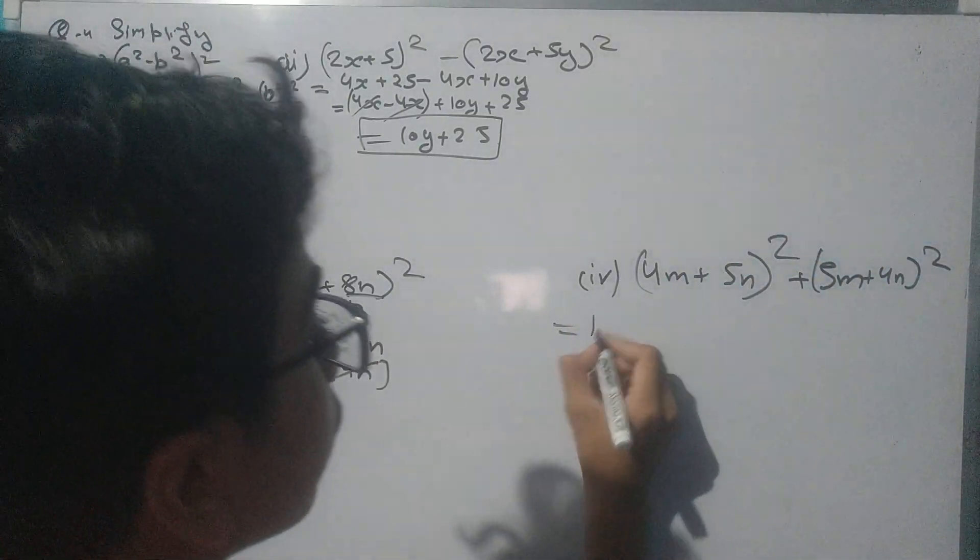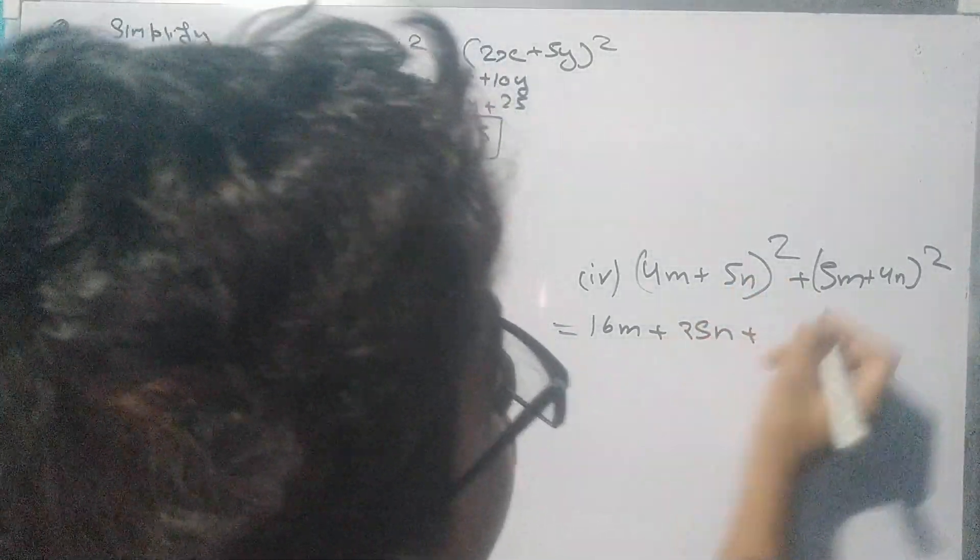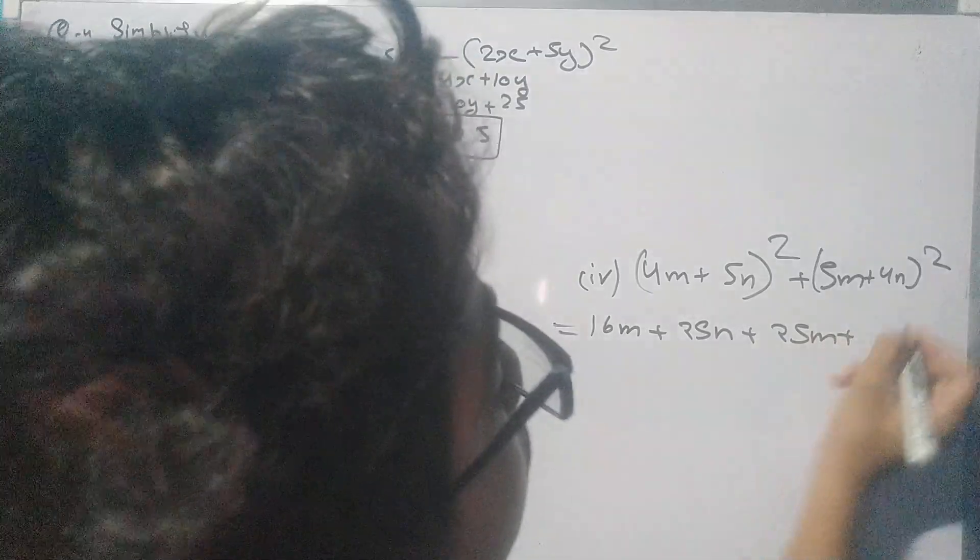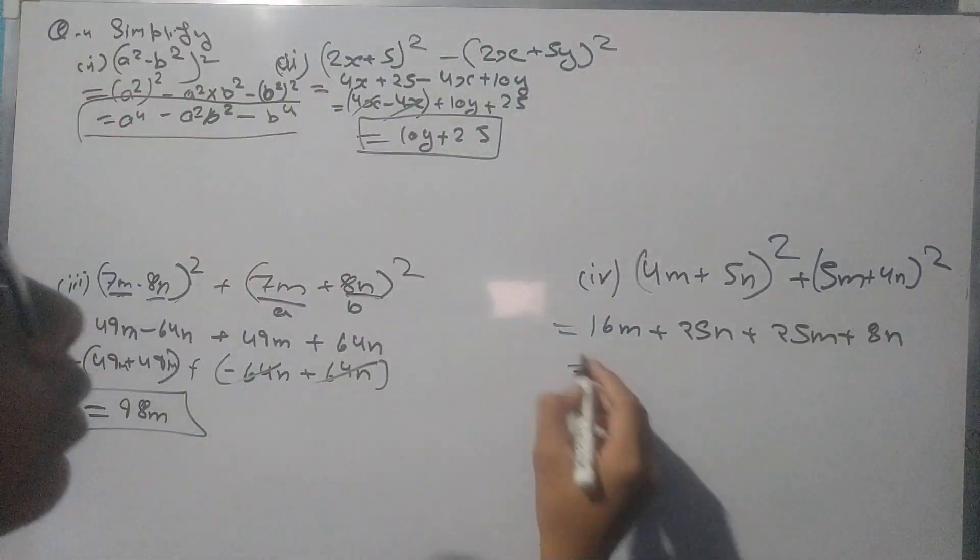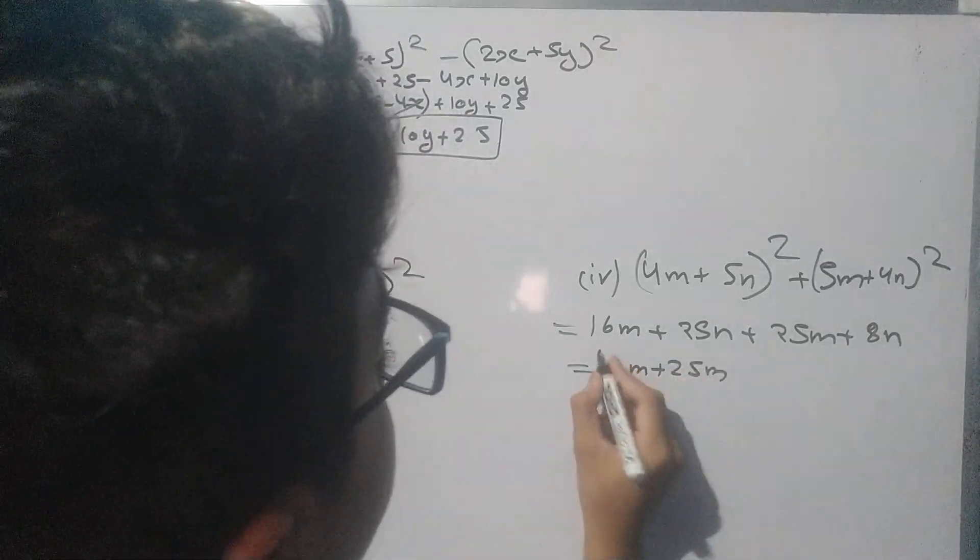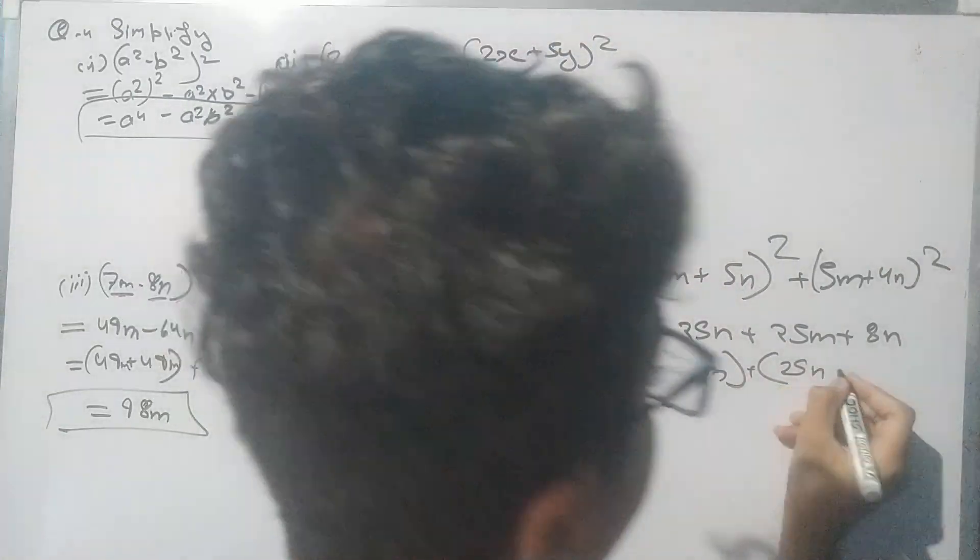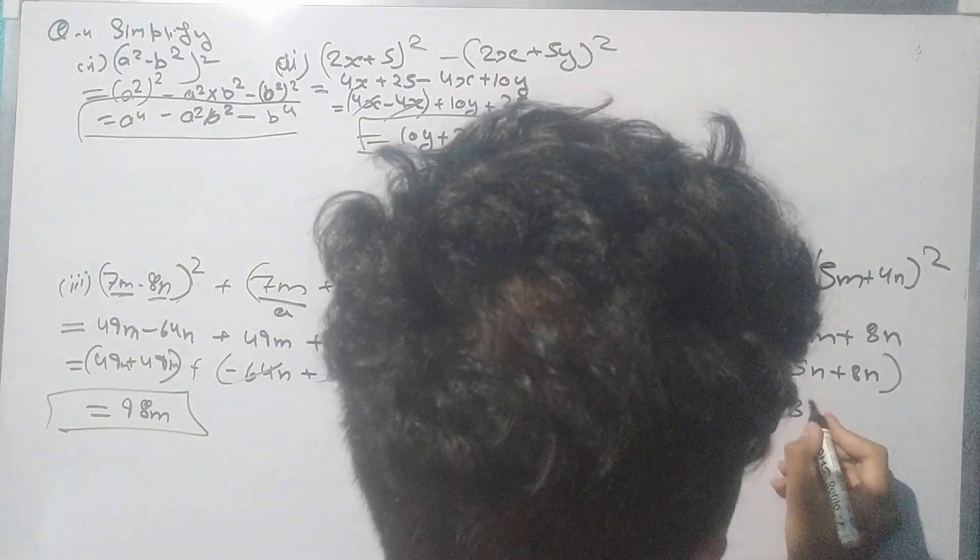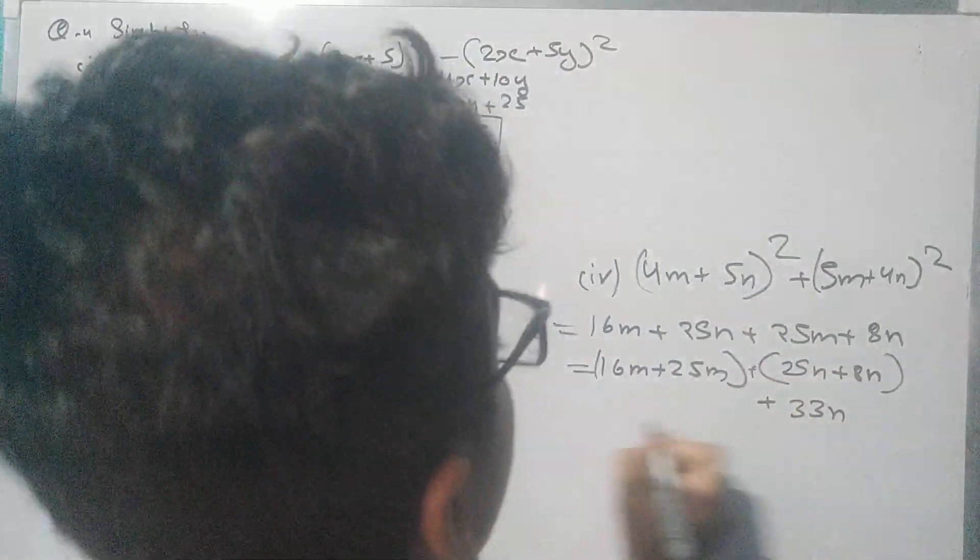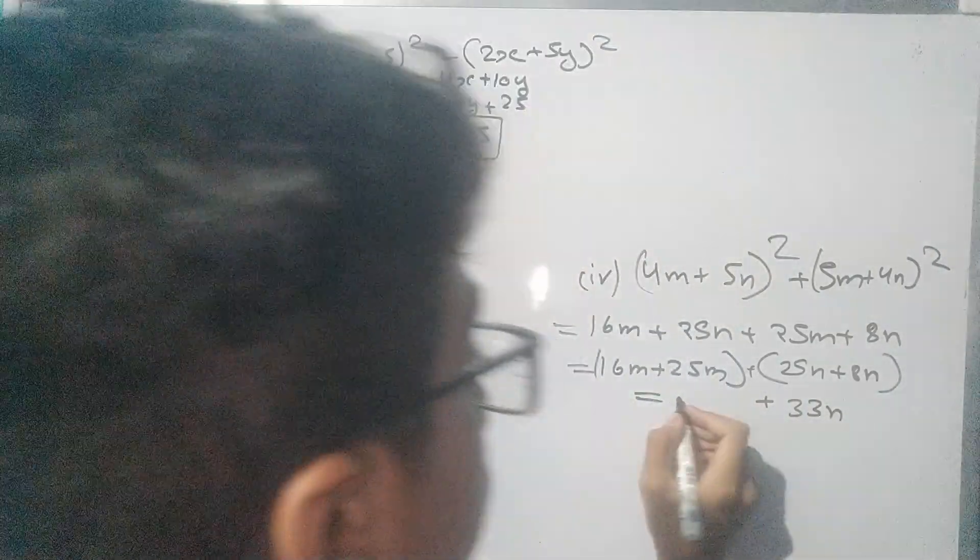4 into 4 is 16m² plus 25n² plus 40mn. So let's categorize: 16m² plus 25m² plus 25n² plus 40mn.